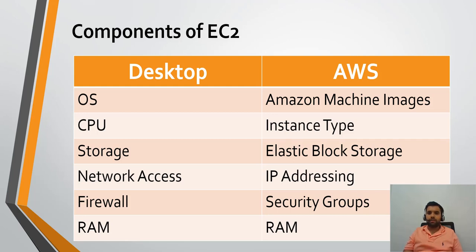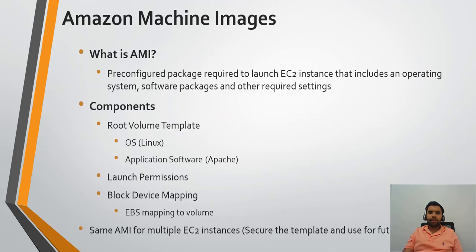There are a lot of similarities between the desktop and AWS — only the terminology is different. Let's start with Amazon Machine Images. An AMI is a pre-configured package required to launch an EC2 instance that includes an operating system, software packages, and other required settings.